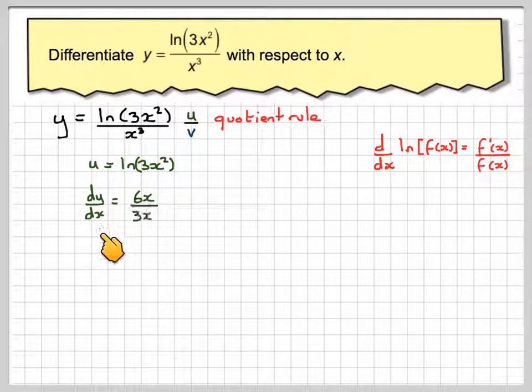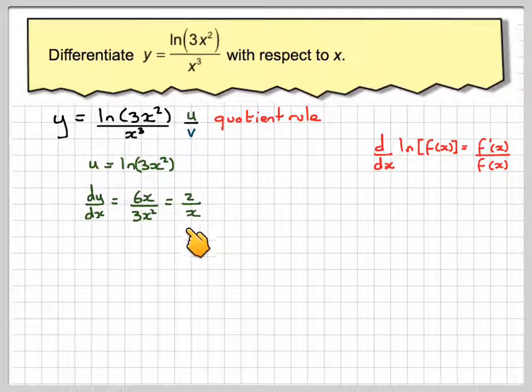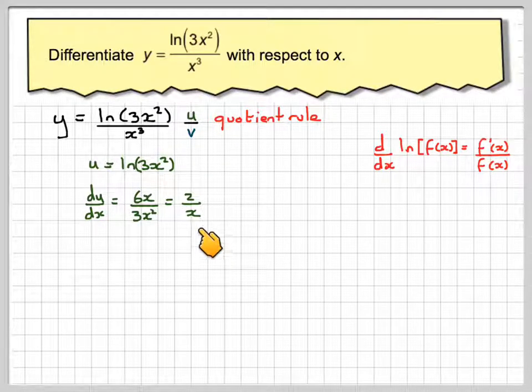So du/dx will be 2 times 3, which is 6x, over itself, 3x squared, and that simplifies down to 6 divided by 3, which is 2, x divided by x squared, which is 1 over x, so it's 2 over x.